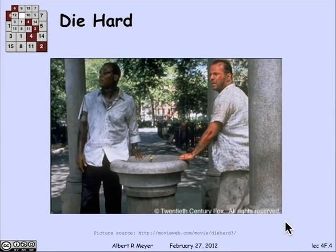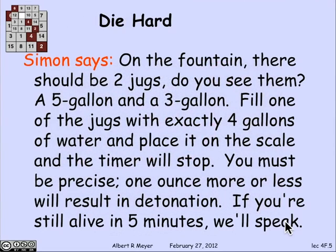Let's look at a fun example from a Die Hard movie. There was one with Bruce Willis and Samuel L. Jackson playing a detective and a friend who helps him deal with a madman. The madman's name is Simon. Simon says to them, standing by a fountain in the park: on the fountain there should be two jugs — a five-gallon and a three-gallon. Fill one of these jugs with exactly four gallons of water and place it on the scale, and the timer will stop. You must be precise — one ounce more or less will result in detonation. If you're still alive in five minutes, we'll speak.